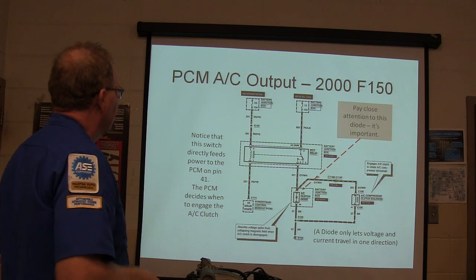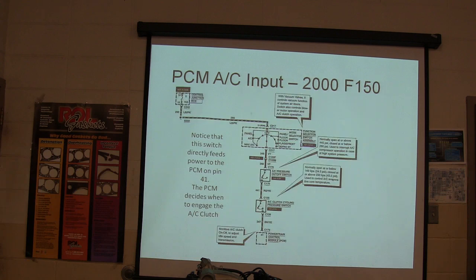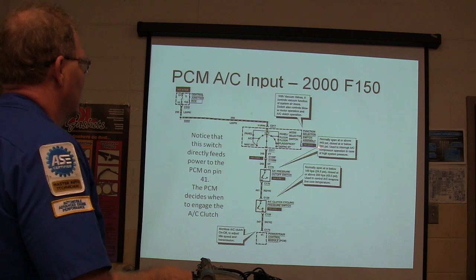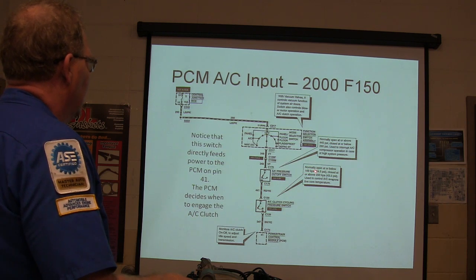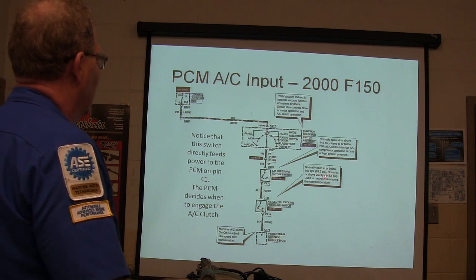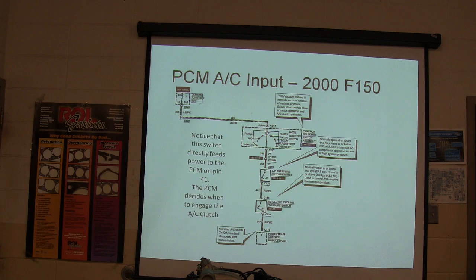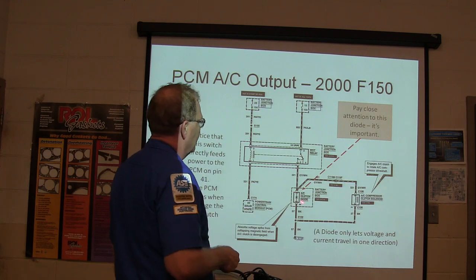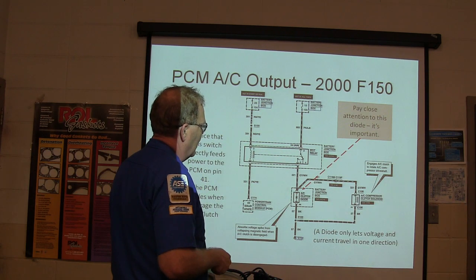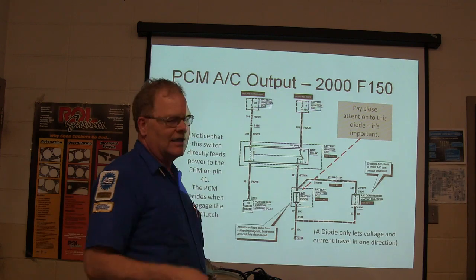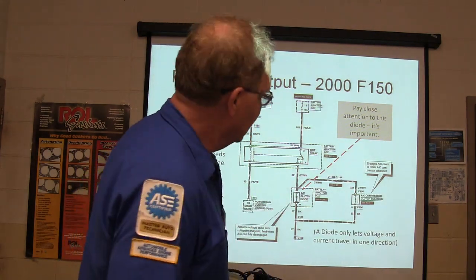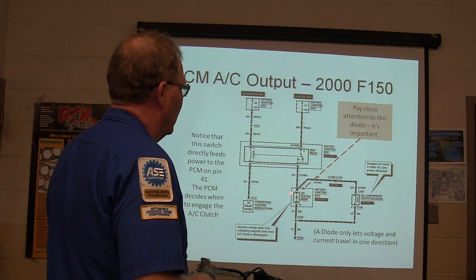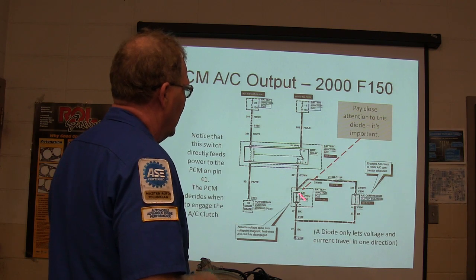Both switches have to be closed in order for the PCM to operate the clutch. On a 2000 F-150, the powertrain control module watches those switches and controls the relay. The high pressure switch is open at or above 445 PSI, closed below 260. The low pressure switch is normally open below 24.5 PSI and closed at 43.5 PSI — there's a differential between when they open and close.